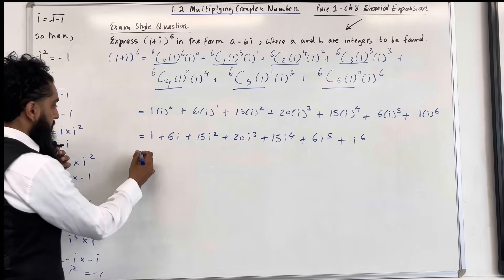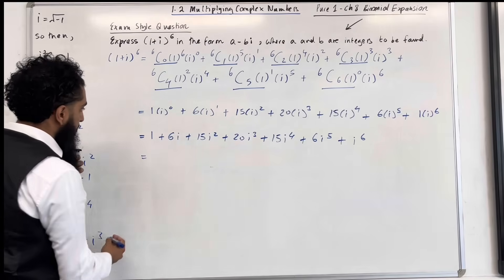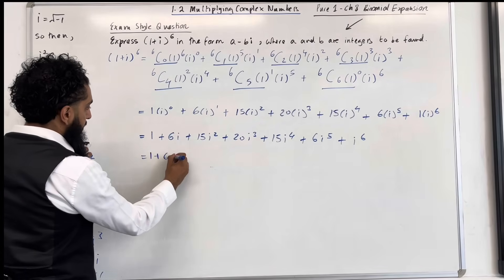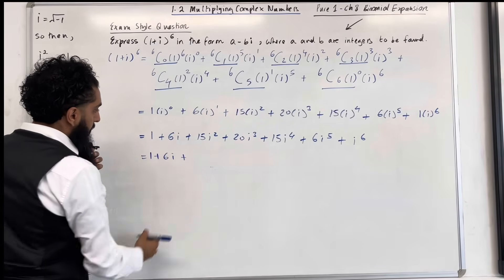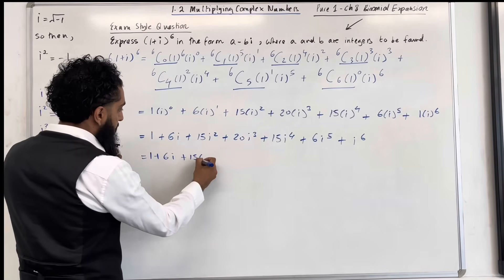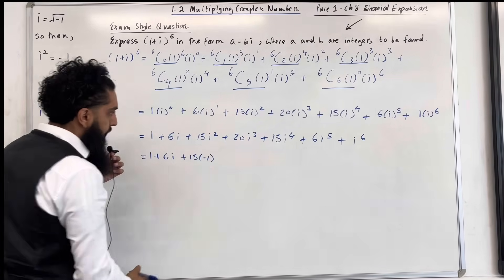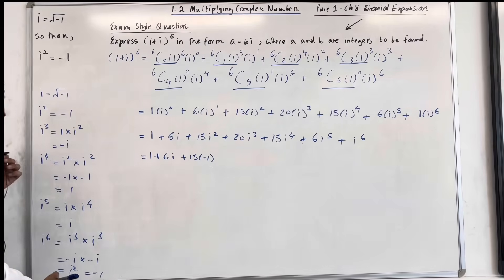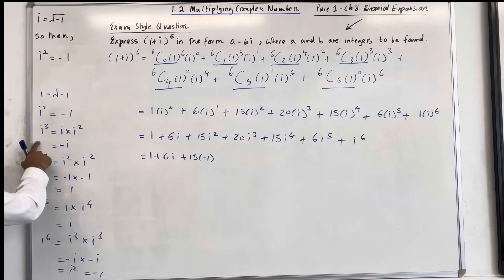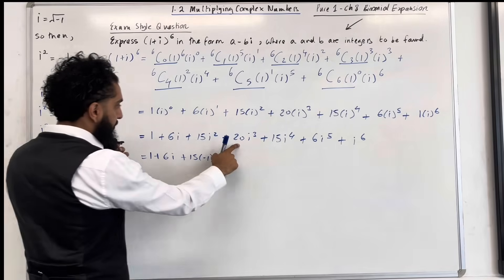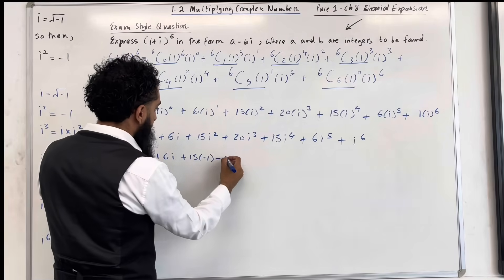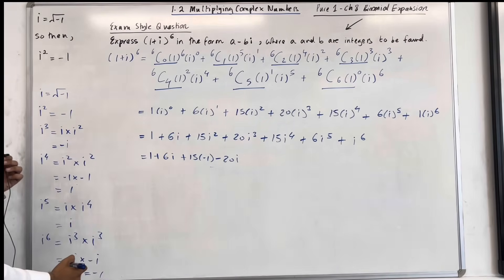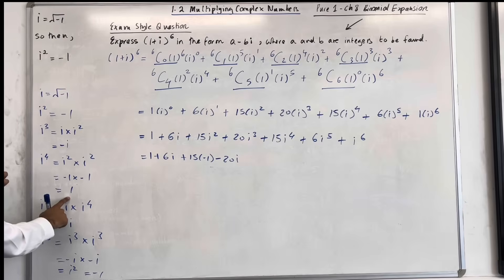So now I can go back and substitute certain values in. I've got 1 plus 6i plus 15 lots of i squared, which is minus 1. We know that i cubed becomes minus i, so this term becomes minus 20i.